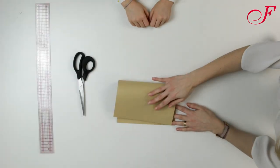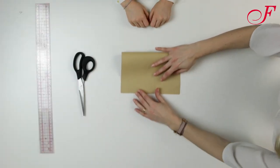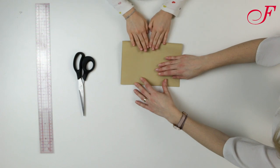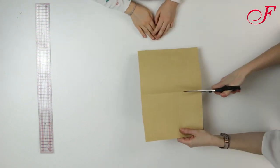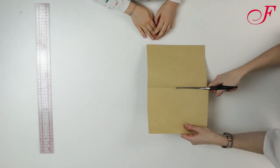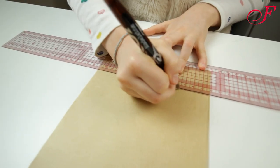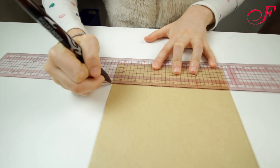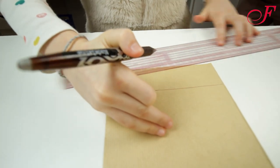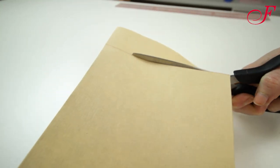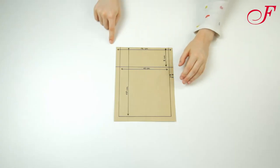The pouch is composed of two identical rectangles. The easiest way is to fold a sheet of paper in half and to cut on the fold line. Then cut it again to obtain a 14 cm x 18 cm rectangle. Here is the pattern of our pockets.